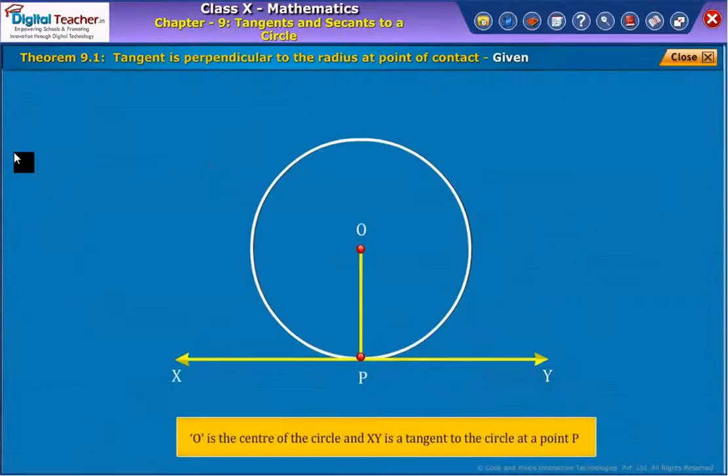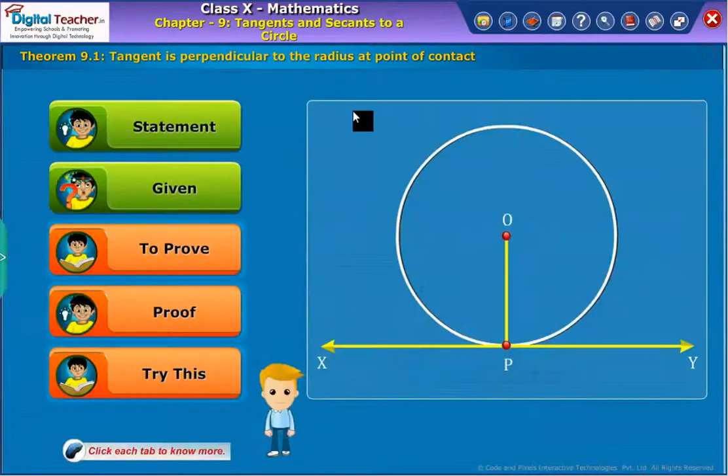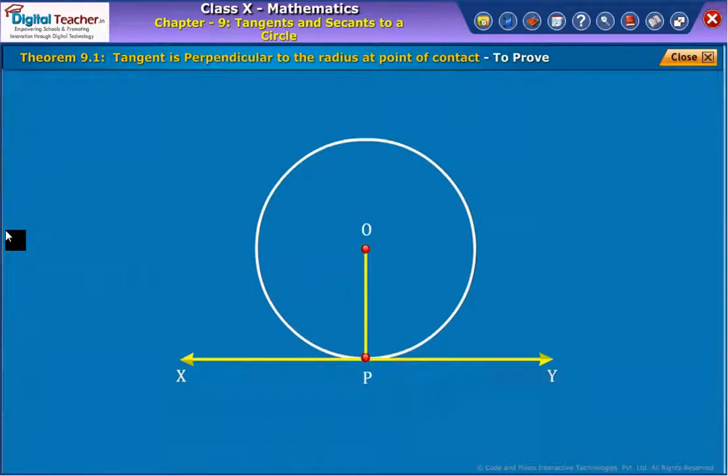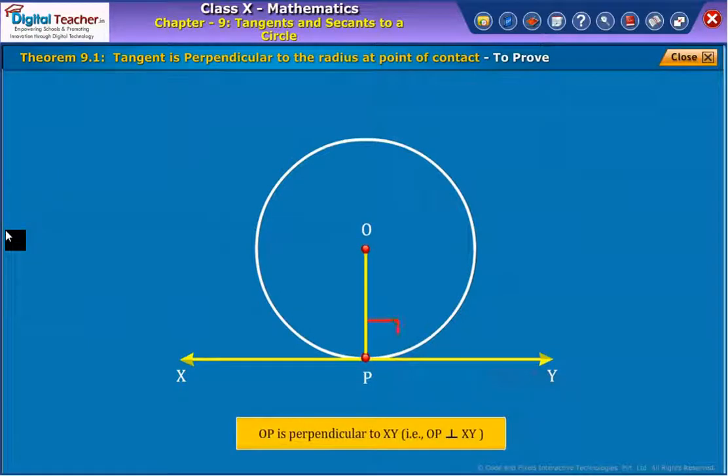Given information: O is the center of the circle and XY is a tangent to the circle at point P. We need to prove that OP is perpendicular to XY.